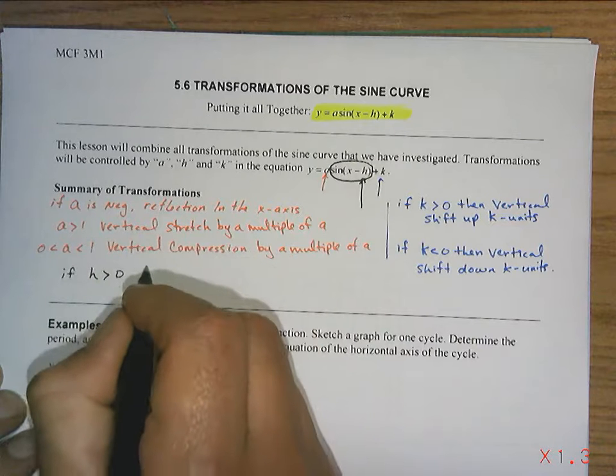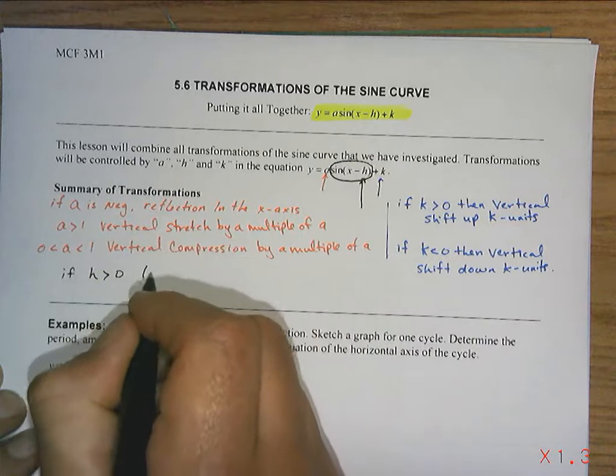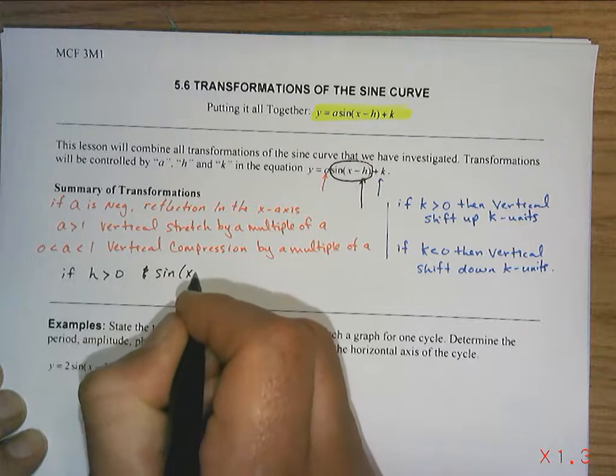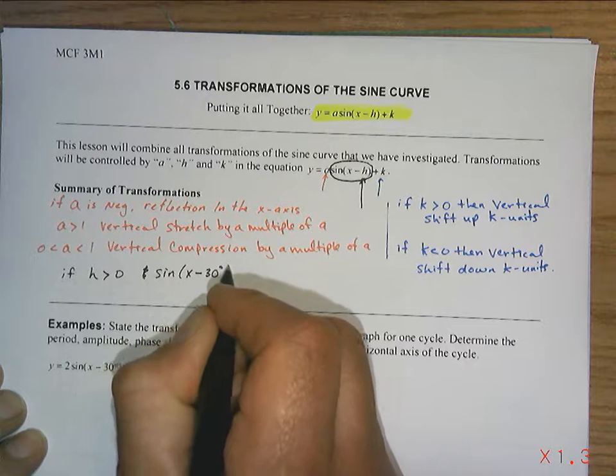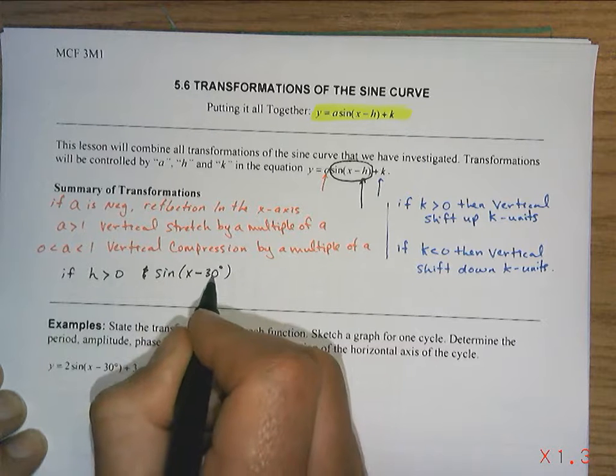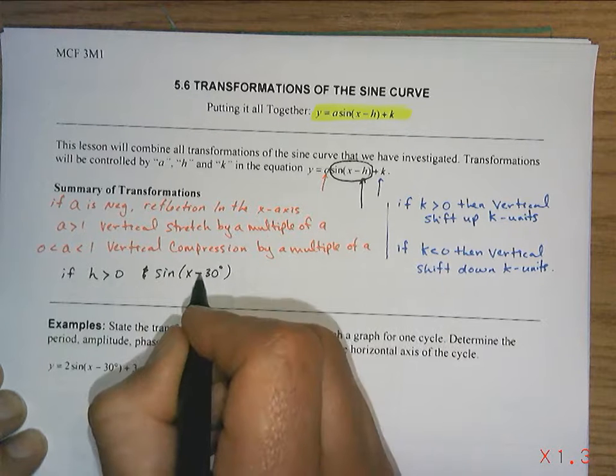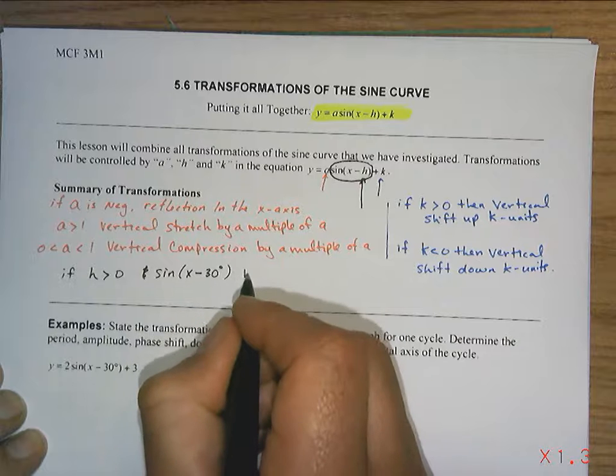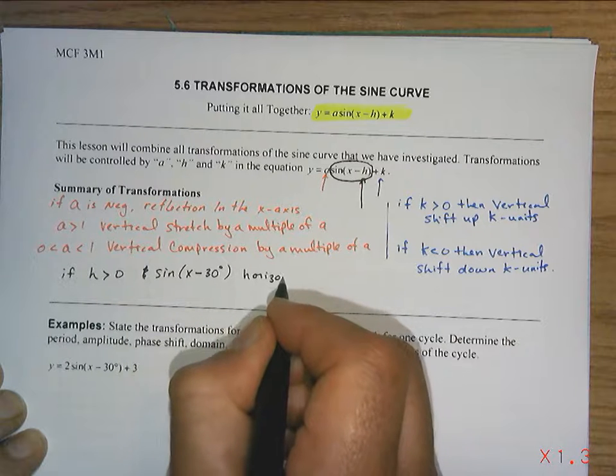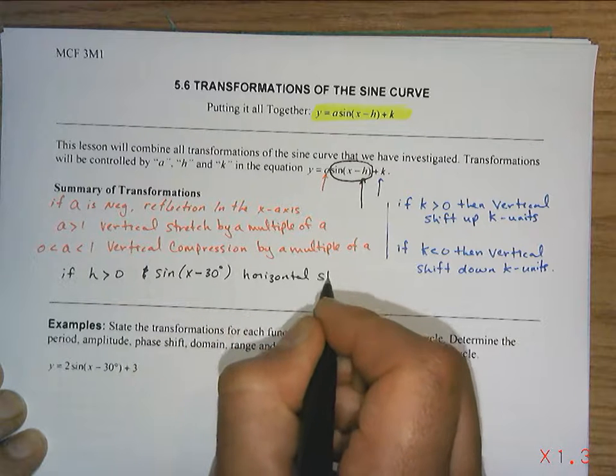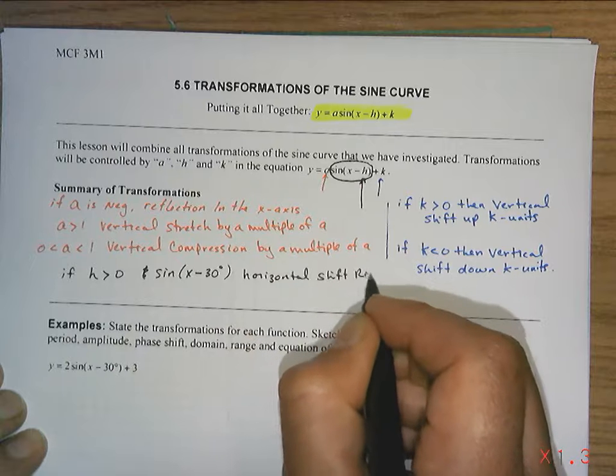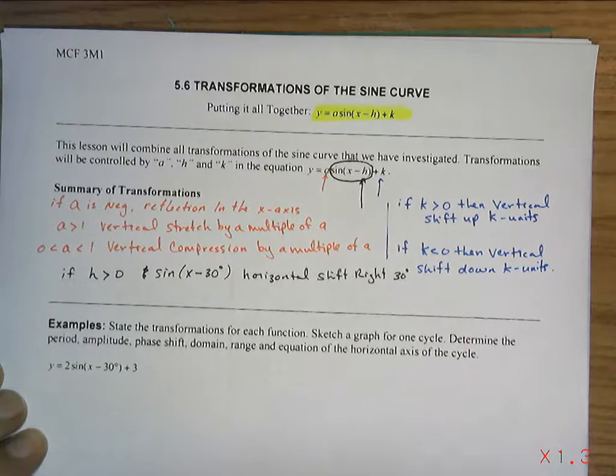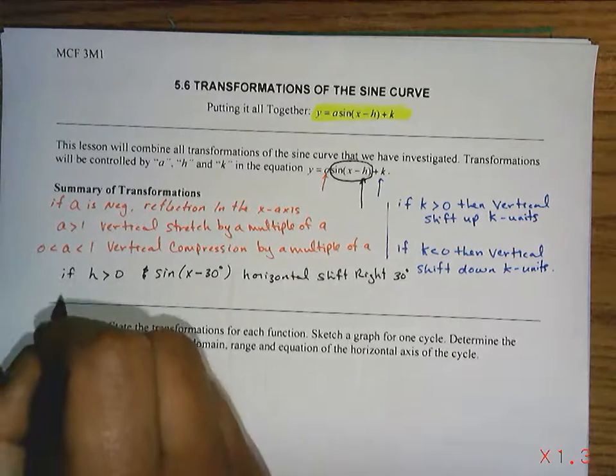So what we get is if H is greater than zero, it would look something like this: it would look like sine(x - 30). So that's a positive H because the negative and the negative, there's the positive. So this would be a horizontal shift right 30 degrees.